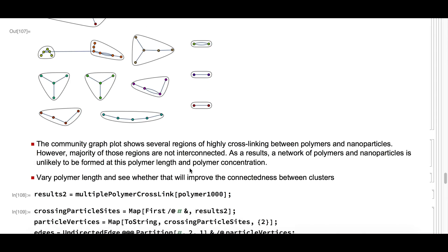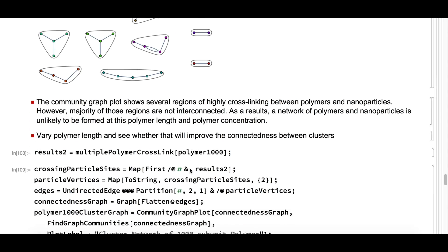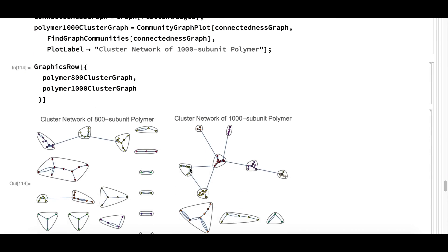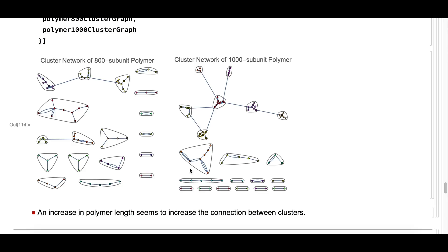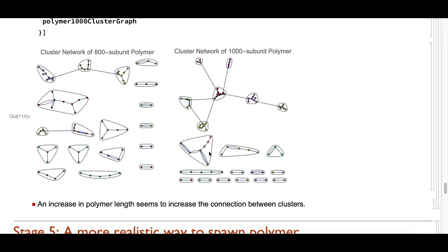What I want to show next is a comparison between a cluster network of 100-subunit polymers and a cluster network of 1000-subunit polymers. As you can see, as the polymer length increases, there is a higher chance that the clusters can connect together. Definitely, the polymer length can affect the connectedness of the system and give a higher chance that the polymer can connect nanoparticles and form a cohesive network.